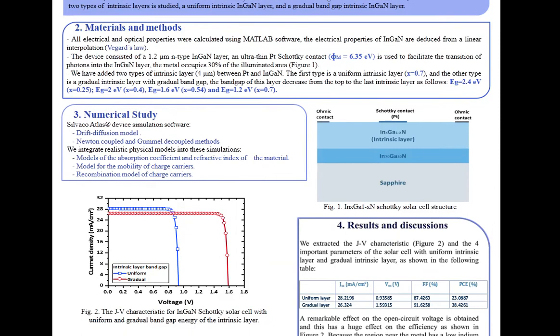Our studied solar cell consists of 1.2 micrometer n-type indium gallium nitride and ultra-thin platinum for Schottky contact.